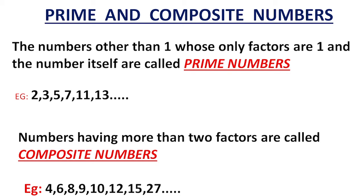Take 10: 1 times 10 is 10 and 2 times 5 is 10. In the 1's, 2's, 5's, and 10's tables we can find 10. So 10 is a composite number.